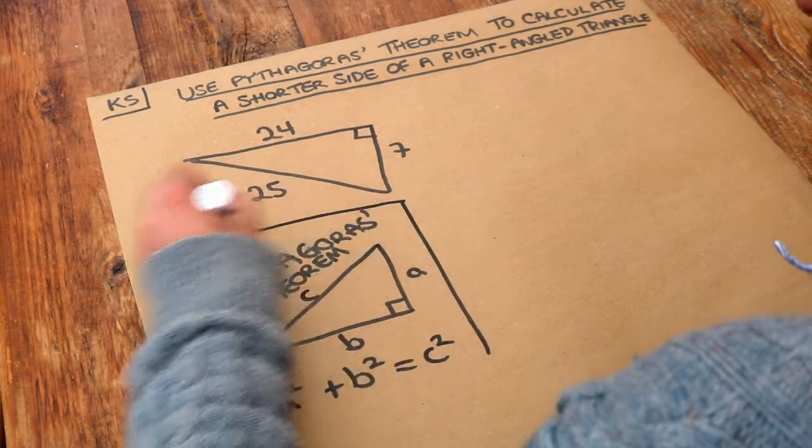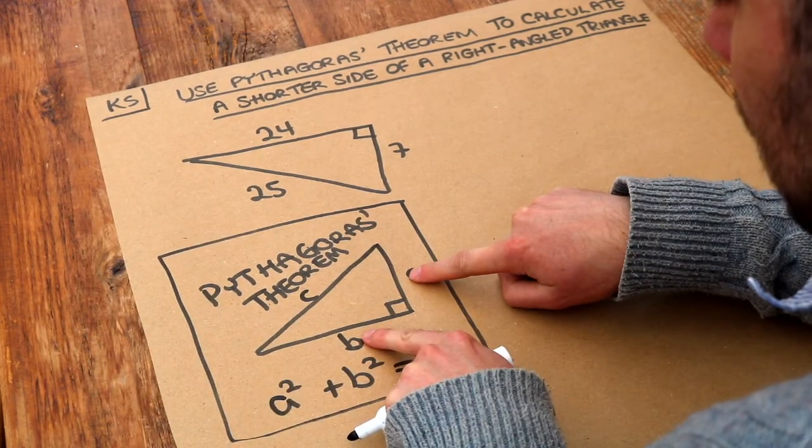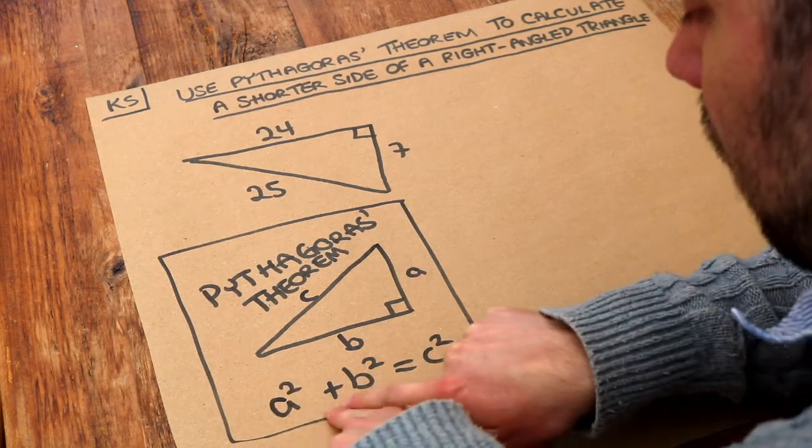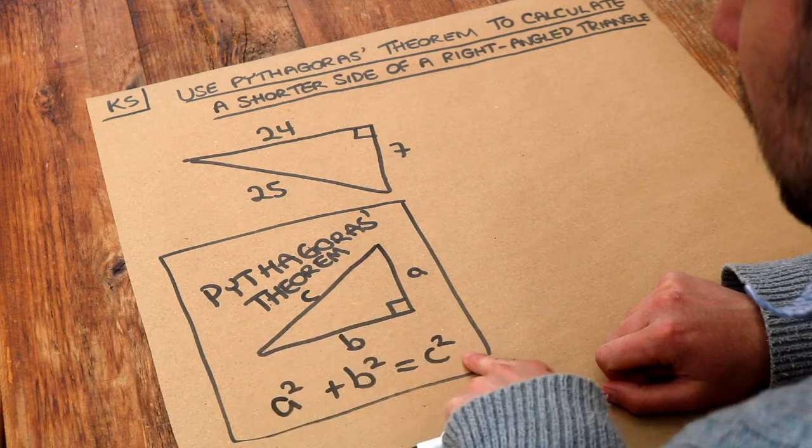In words, that's basically saying that if we take each of the shorter sides of the right-angled triangle, square them and add them together, that is equal to the longest side, the hypotenuse, squared.